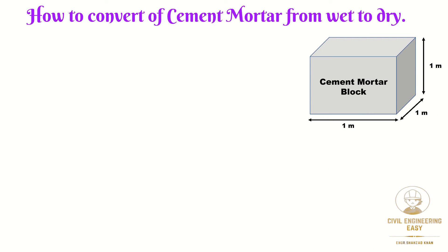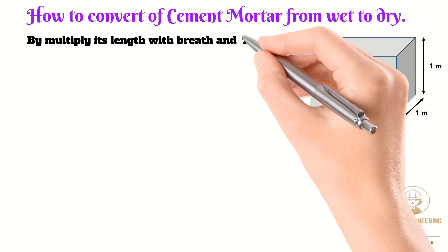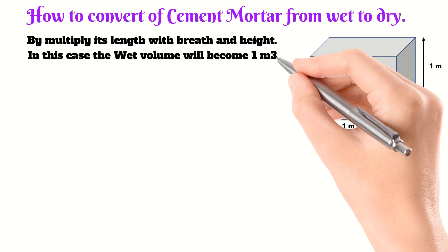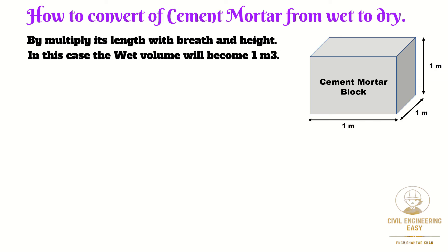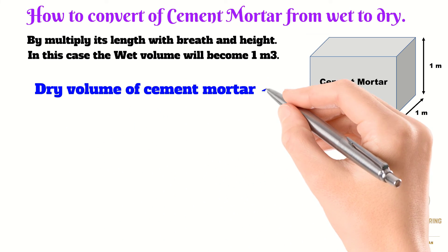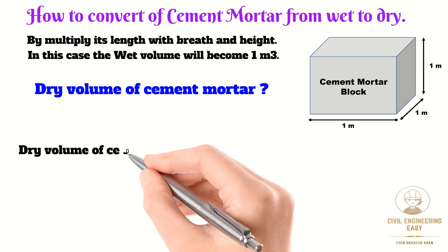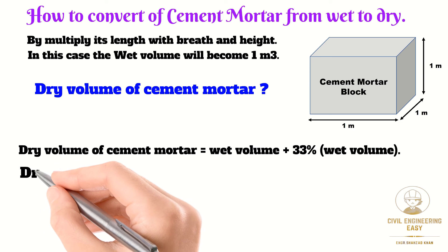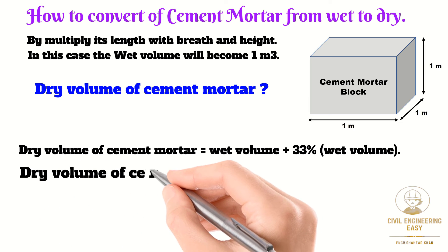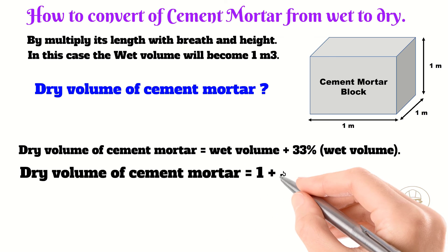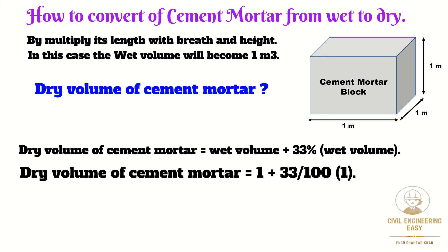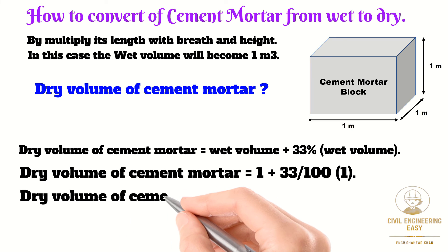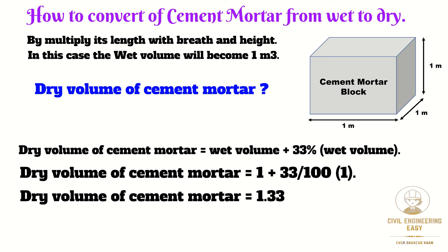Similarly, if we have to make a cube from cement mortar with all dimensions equal to 1 meter, the wet volume of the cube is calculated by multiplying length, width, and height, giving 1 cubic meter. To calculate the dry volume of cement mortar, the formula is: dry volume equals wet volume plus 33% of the wet volume. So the dry volume of cement mortar equals 1 + 0.33 = 1.33 cubic meters.